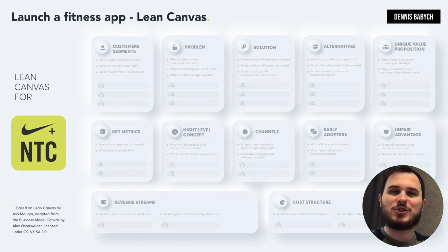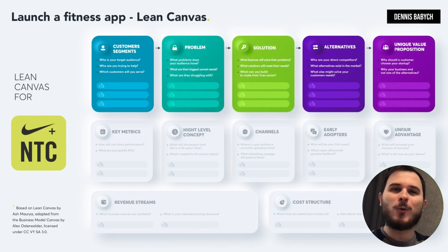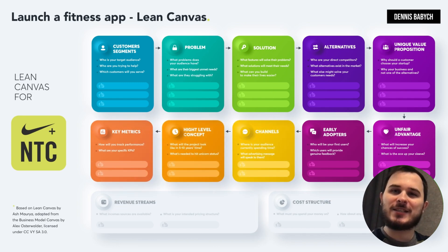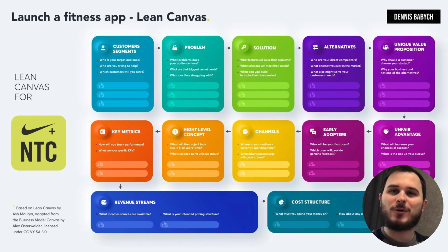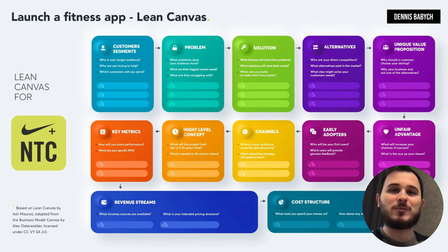The initial step is to generate a Lean Canvas business strategy to assist you in identifying your core characteristics and unique selling points. Start by identifying your target audience and assessing what features they require that aren't accessible on platforms such as MyFitnessPal or Nike Training Club. Additionally, investigate your rivals and other solutions that may address the issues of your target audience. Evaluate your unfair advantage — the aspect that distinguishes you from the competition. Perhaps you have a community of workout enthusiasts on YouTube that you may bring to your new app, lowering your user acquisition expenses. Then identify your early adopters and the online locations where they spend their time, and create strategies to encourage them to use your platform.